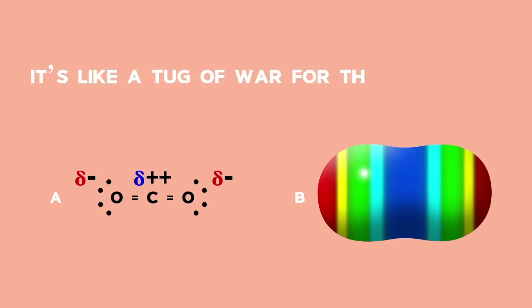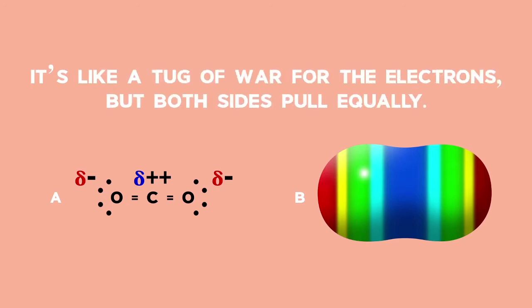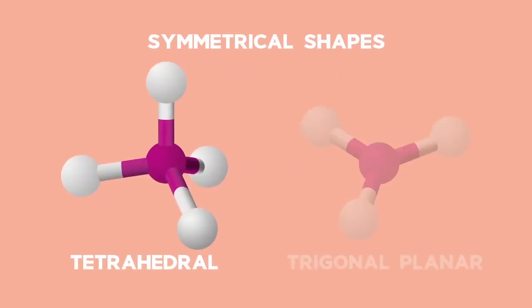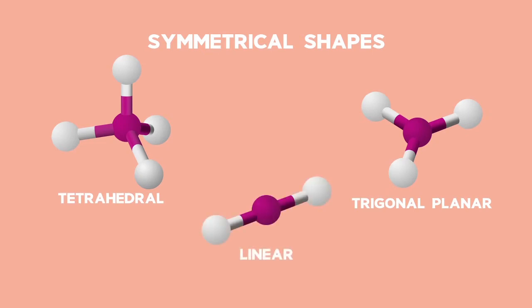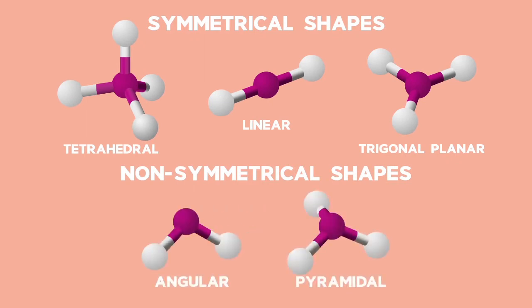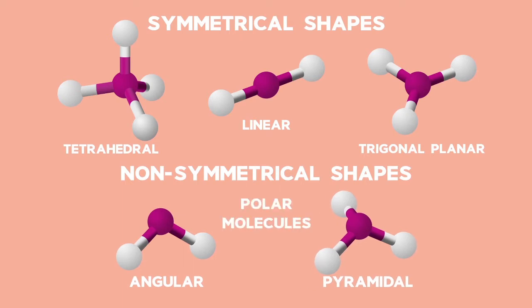So it is like a tug of war for the electrons, but both sides pull equally. Symmetrical molecular shapes such as tetrahedral, trigonal planar, and linear are usually non-polar molecules, while non-symmetrical molecular shapes such as angular and pyramidal result in polar molecules.